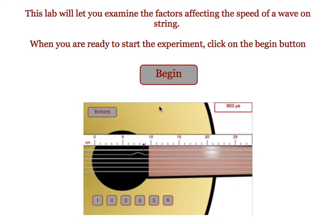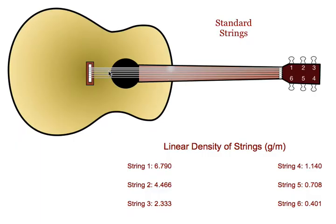This program will allow students to look at the factors affecting the speed of a wave on a string. When students hit begin, they will be given a guitar with six standard strings. The linear density of the strings are given.